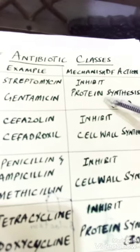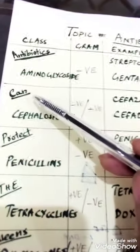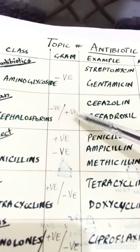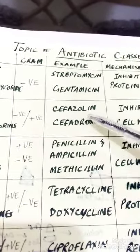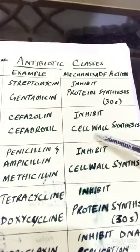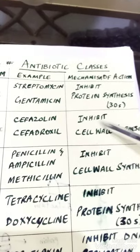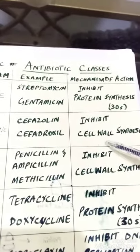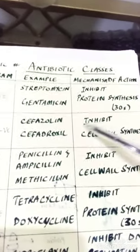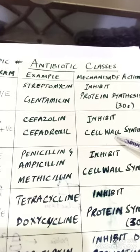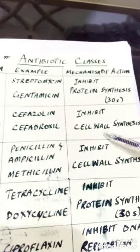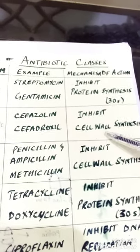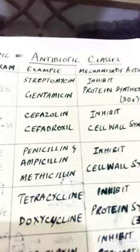The second class is cephalosporins, which act on both gram-negative and gram-positive bacteria. Examples are cefazolin and cefadroxil. Cephalosporins work by inhibiting cell wall synthesis. The bacterial cell wall is made up of sugars (glucose) and proteins attached by peptide bonds. By destroying these peptide bonds, cephalosporins destroy the cell wall.